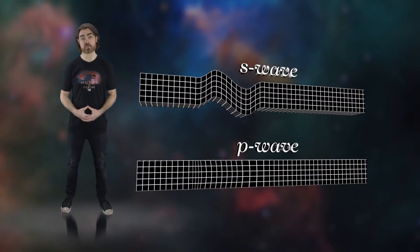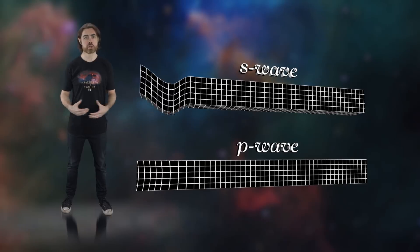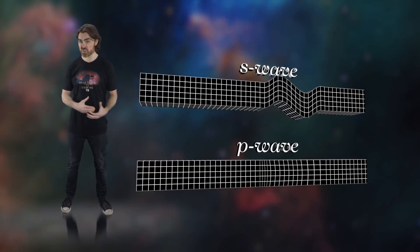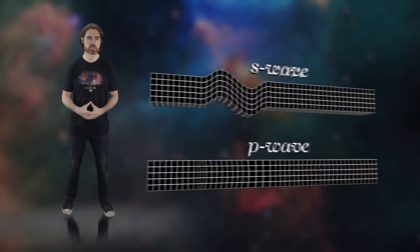Understanding asteroseismology starts with understanding helioseismology — actually, back up. Understanding helioseismology starts with regular old seismology on Earth, geoseismology. On Earth, seismic waves are generated by earthquakes and can travel around the planet as longitudinal pressure or P waves, transverse shear or S waves, and surface waves which are a mixture of P and S waves. Stars also support P waves, and these are true sound waves that echo around their interiors. Because stars are fluid rather than solid, they don't support shear waves.